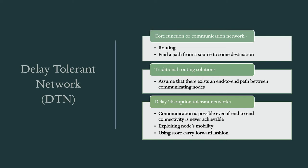Traditional routing solutions to these functionalities assume that there exists an end-to-end path between the communicating nodes. We already assume there is a source and a destination and they are connected somehow, meaning there is at least one path from the source to destination. Otherwise it is not possible to find the path or route a packet accordingly.